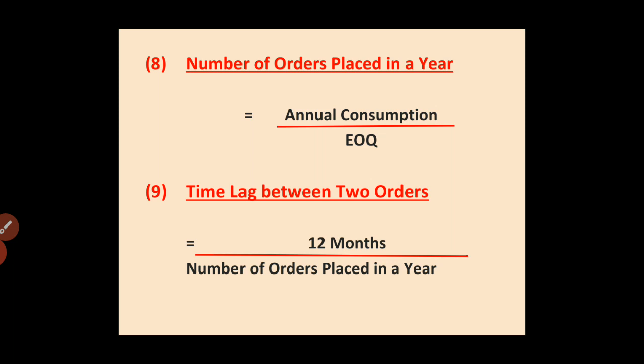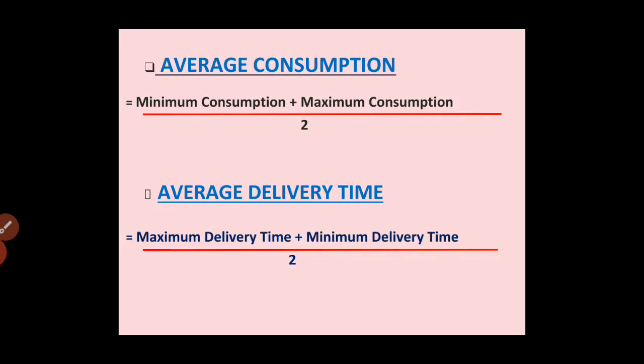Formula number nine: Time lag between two orders. Suppose from formula eight the answer is 12 orders — that means throughout the year, 12 times the order is placed. The time gap between two consecutive orders equals 12 months divided by number of orders placed in a year. For example, 12 divided by 12 equals 1, meaning there is a time lag of 1 month between two orders.